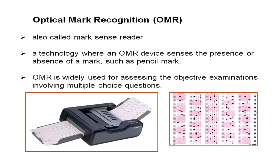The next input device is the Optical Mark Recognition, or OMR. This is a mark-sense reader and this technology is used for evaluating multiple choice examinations. It senses the presence or absence of a mark such as a pencil mark — as shown on the slide, the OMR machine senses the sheet to verify how many answers are correct and how many are wrong. It is very useful for assessing objective examinations involving multiple choice questions.